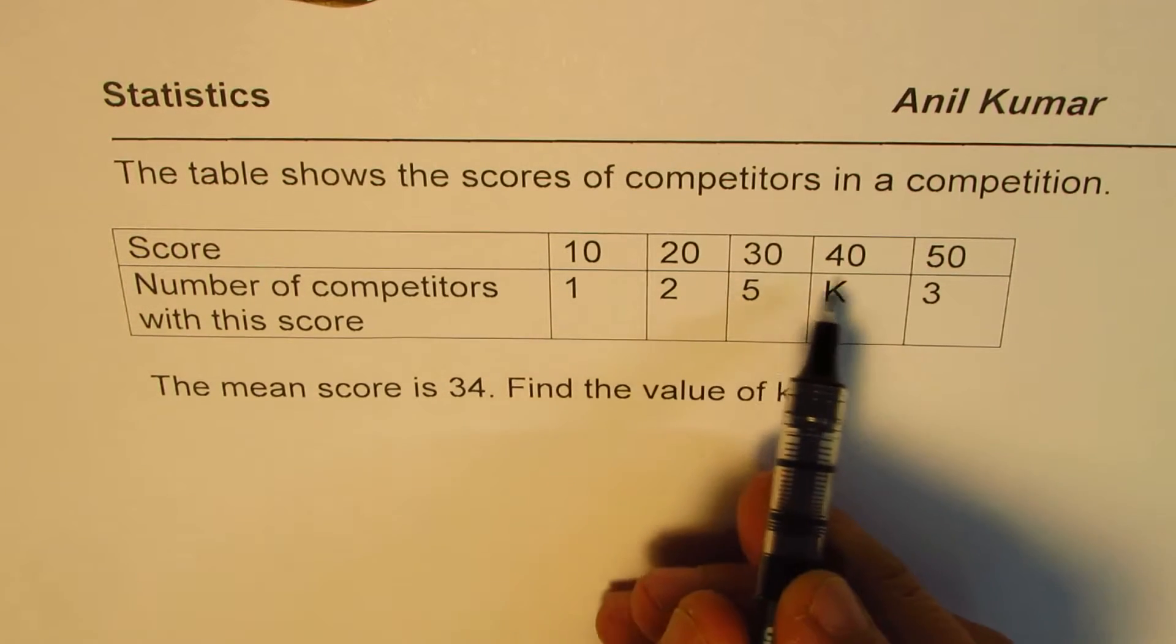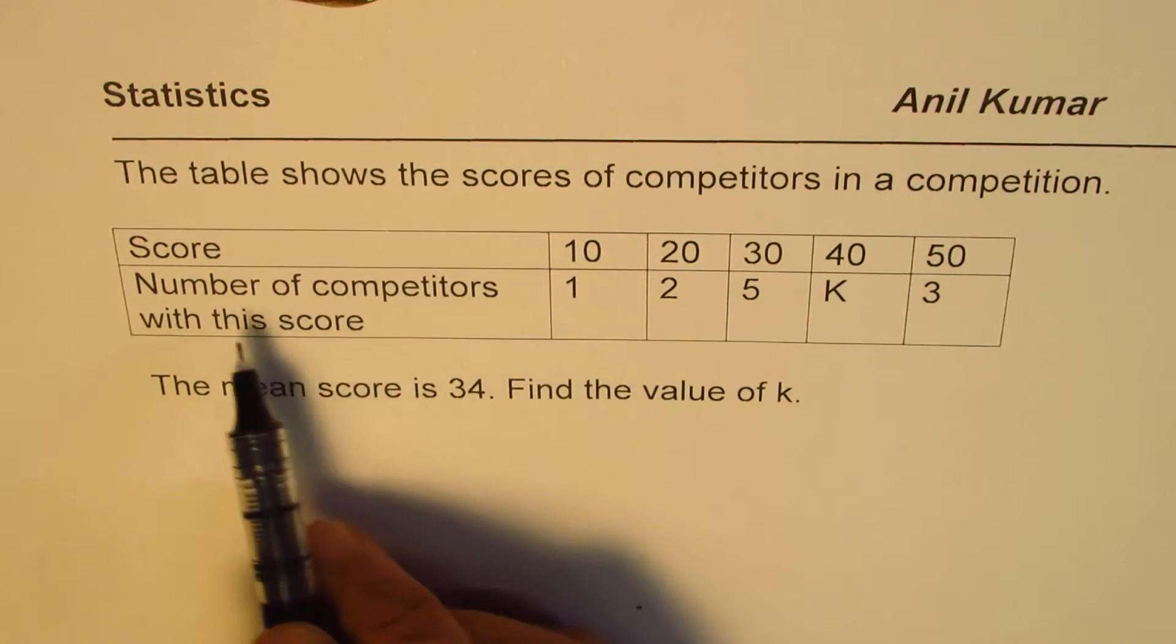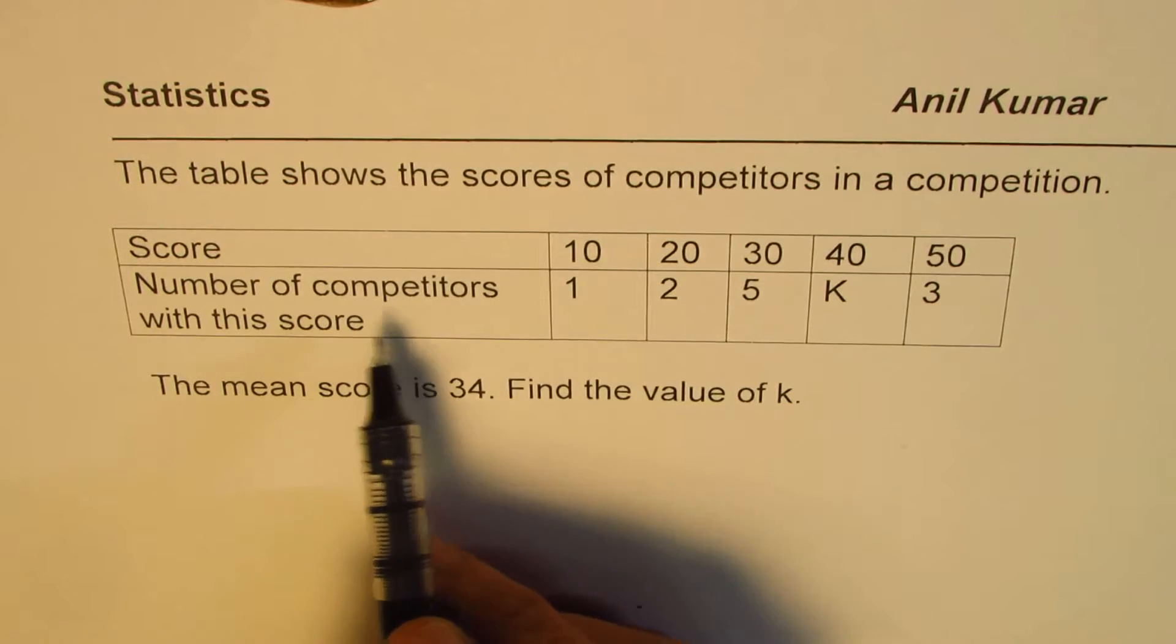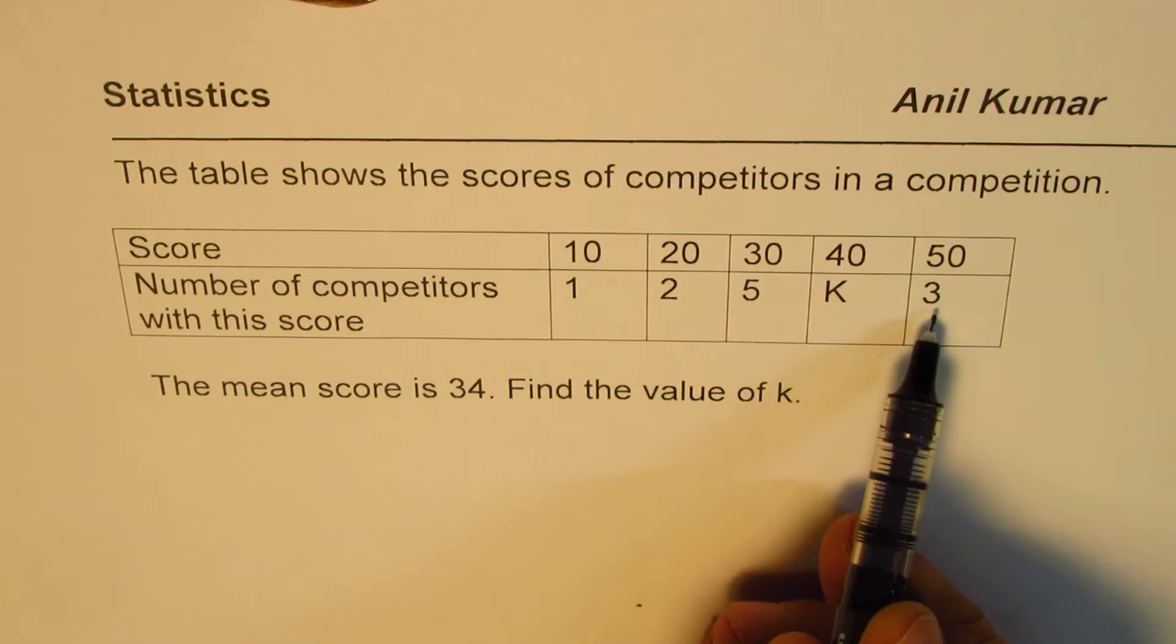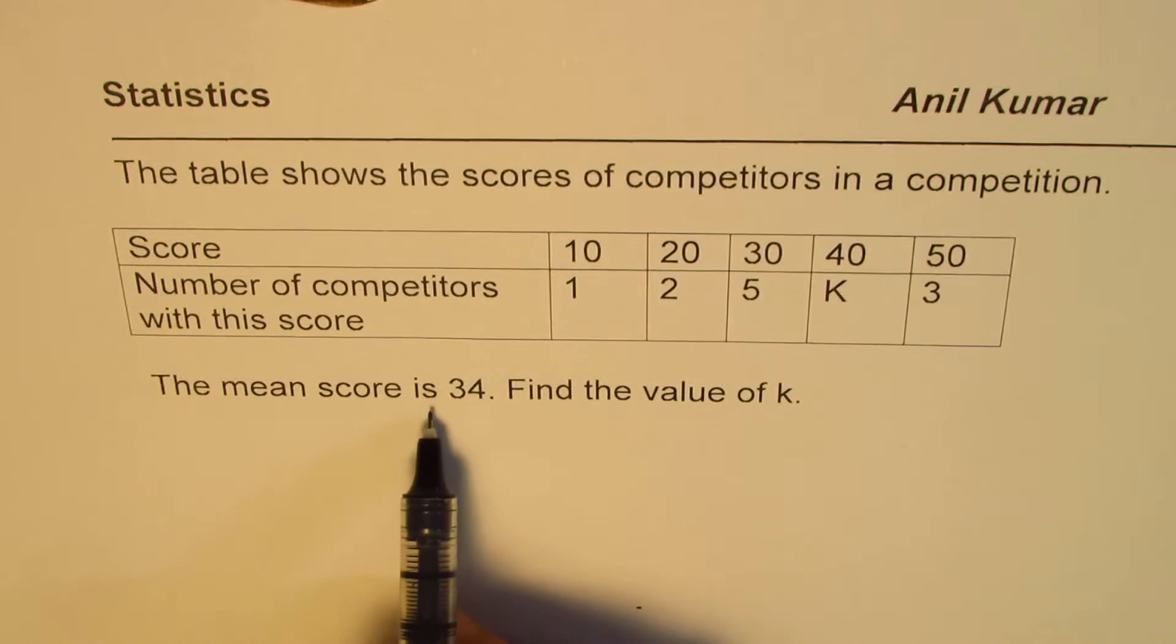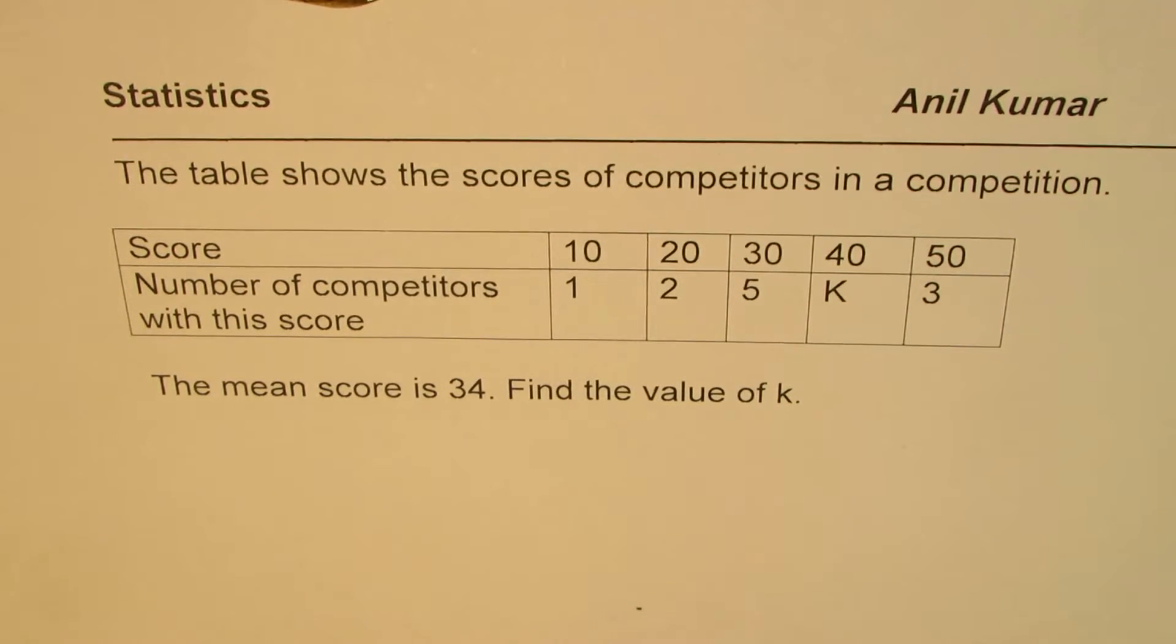The scores are 10, 20, 30, 40, 50 and number of competitors with this score are 1, 2, 5, K and 3. The mean score is 34. Find the value of K.